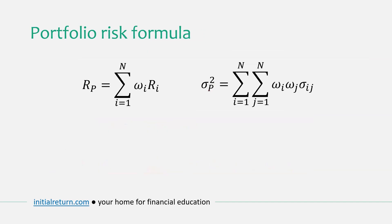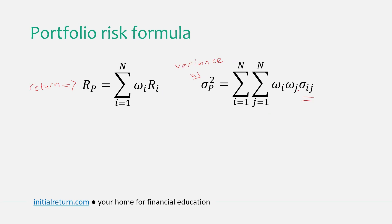Now let me show you the general portfolio risk formula. The portfolio return formula is a weighted average of individual returns. The portfolio variance formula has a more complex structure: it involves a double sum over investment weights and covariance terms. Taking the square root gives portfolio standard deviation, or portfolio risk. It looks more complicated because of the covariance terms.